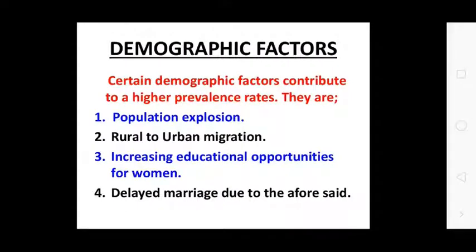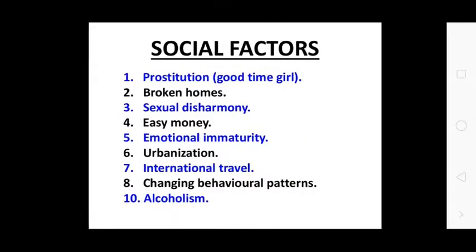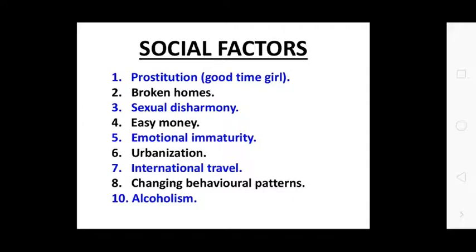Demographic factors: Certain demographic factors contribute to a higher prevalence rate, including population explosion, rural to urban migration, increasing education opportunities for women, and delayed marriage due to the aforesaid factors. Social factors include: prostitution, broken homes, sexuality, disharmony, easy money, emotional immorality. Organizational factors: international travelers, changing behavior, sexual patterns, and alcoholism.